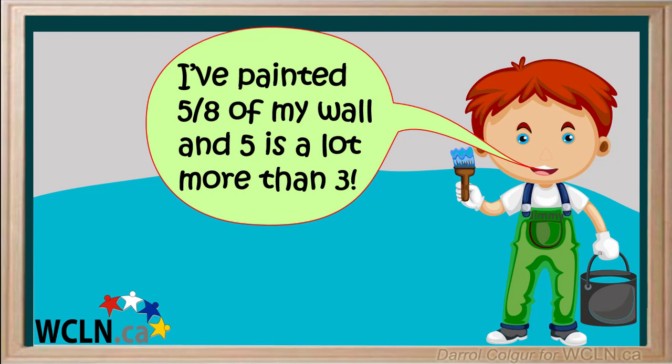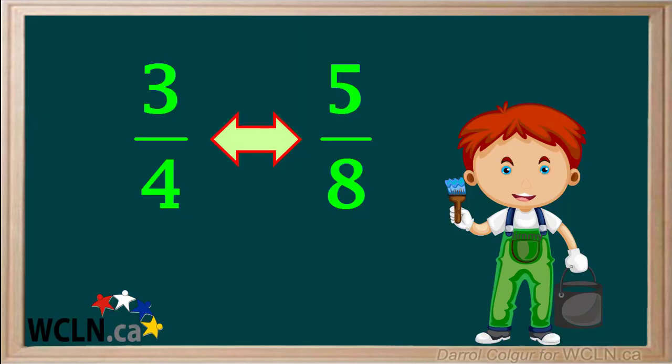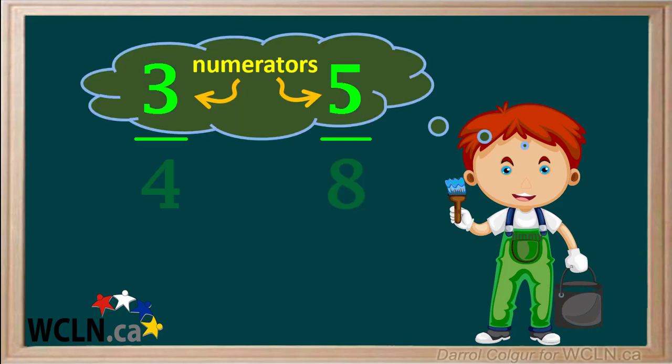Because 5 is a lot more than 3, he is claiming he has painted more of his wall than Marco. But has he really? The problem is when Jimmy is considering the two fractions 3 quarters and 5 eighths, he's only thinking about the numerators and comparing those. The numerator 5 is larger than the numerator 3, but does that make the fraction 5 eighths larger than the fraction 3 quarters?